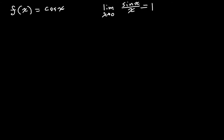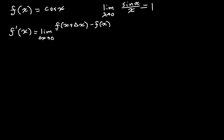So the definition of the derivative is that f prime of x, the derivative, is equal to the limit as delta x goes to zero — also sometimes called h, it doesn't really matter — of f of x plus delta x minus f of x, divided by delta x.